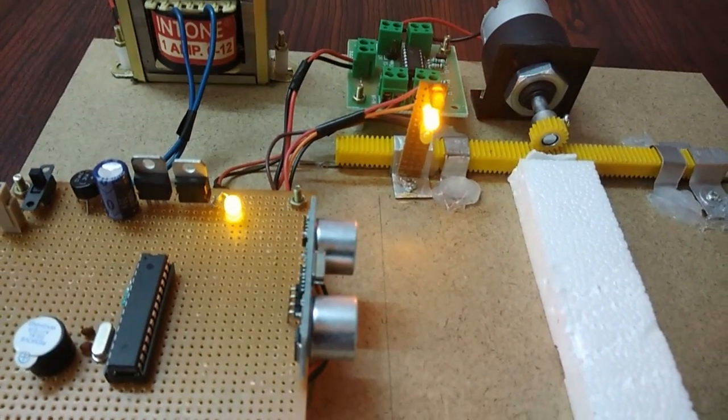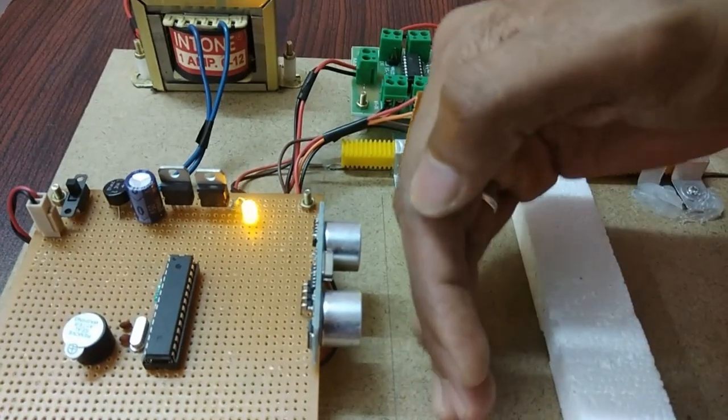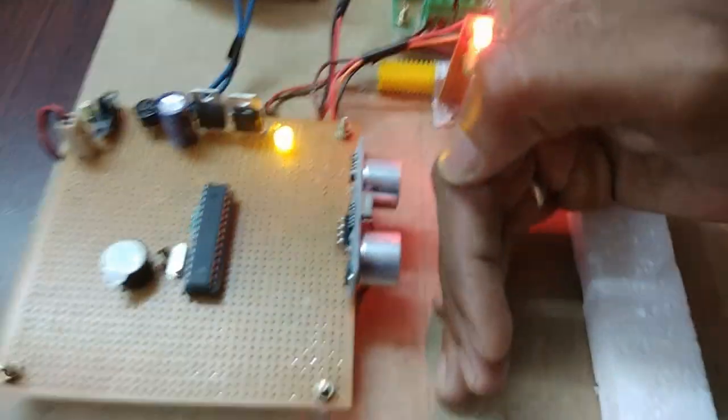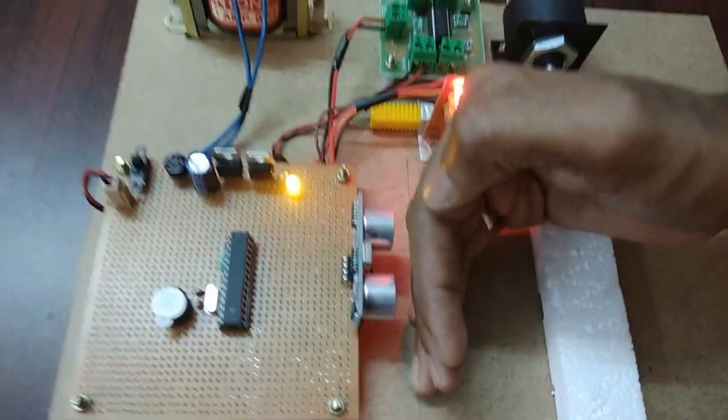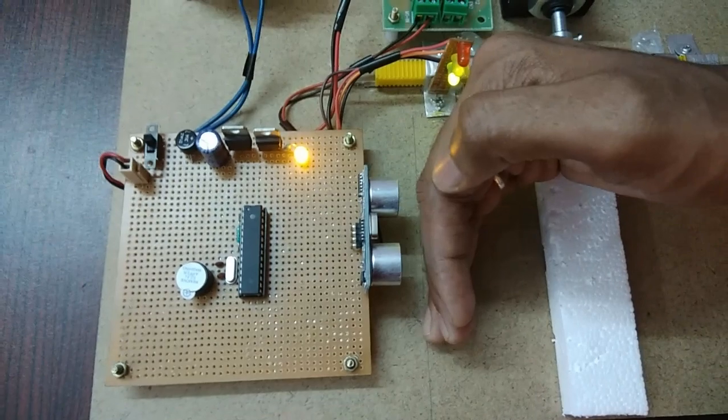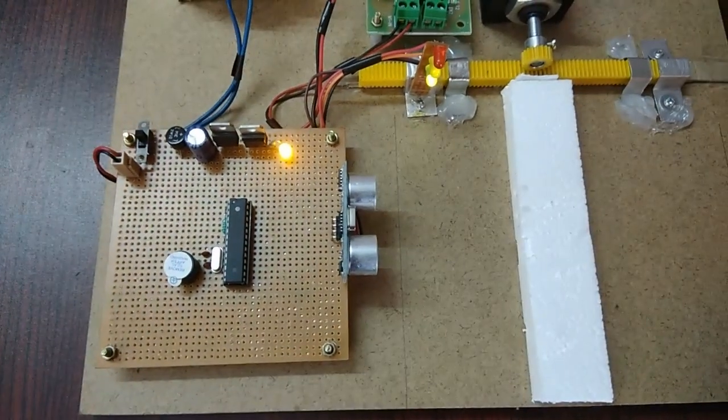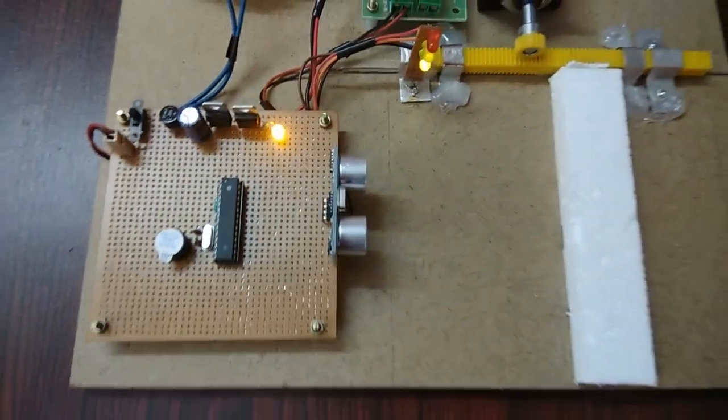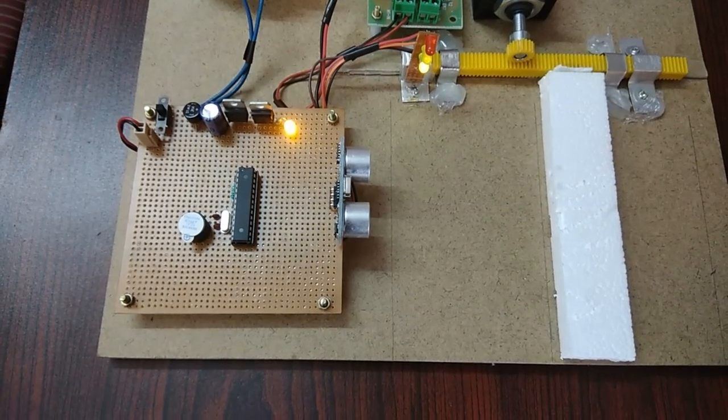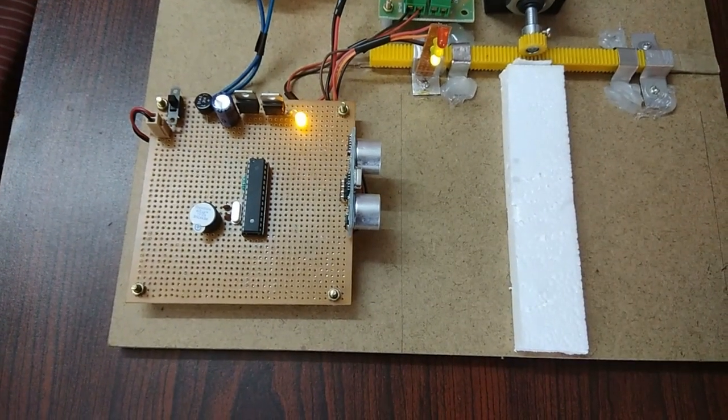So I am going to keep one object in front of this ultrasonic sensor. Now the buzzer will be activated. After that the divider will be moved to right side and again it goes to left.